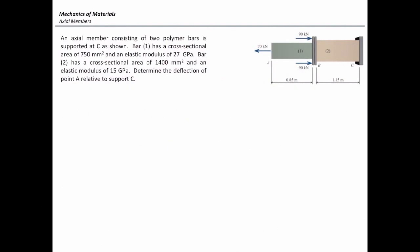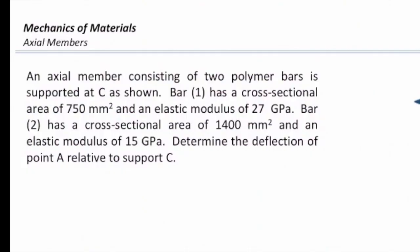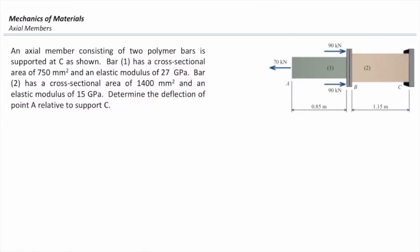An axial member consisting of two polymer bars is supported at C as shown. Bar 1 has a cross-sectional area of 750 mm² and an elastic modulus of 27 GPa. Bar 2 has a cross-sectional area of 1400 mm² and an elastic modulus of 15 GPa. Determine the deflection of point A relative to support C.